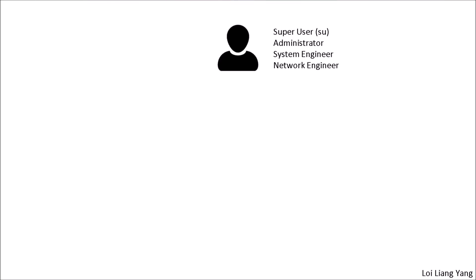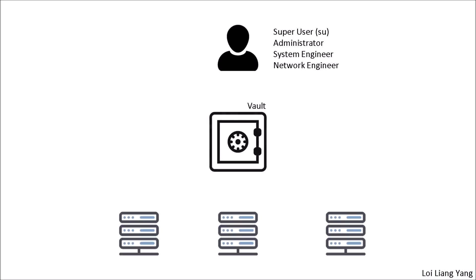One approach is to introduce privilege access management controls as a federated control at the center to help federate identity access management. Instead of directly accessing services, databases, or endpoints, super user administrators go into a vault — an identity access vault — where they draw down the super user or administrator account. From there, the account is furnished, managed, and monitored by the security team, which continuously looks at the different accesses, authorizations, and authentications being used.